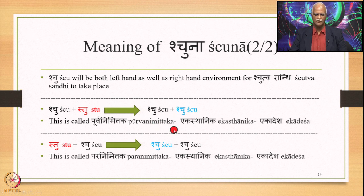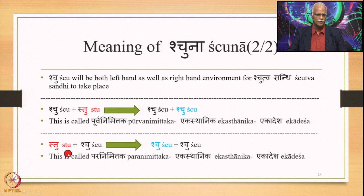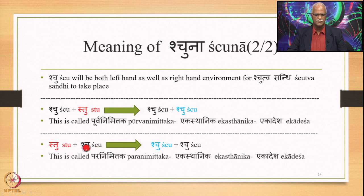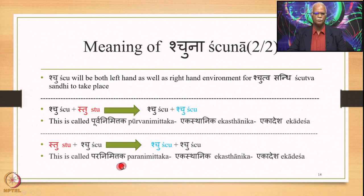Similarly, if we have Shchuhu plus Shchuhu, this Shchuhu is Purva and Shchuhu is Para. Shchuhu is Sthani or Kargi, Shchuhu is Nimitta. In this case, Shchuhu is substituted by Shchuhu and we have Shchuhu plus Shchuhu as the output. This is called Paranimitta Ekasthanika Ekadesha.